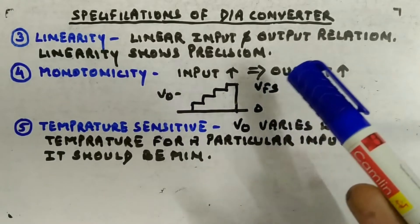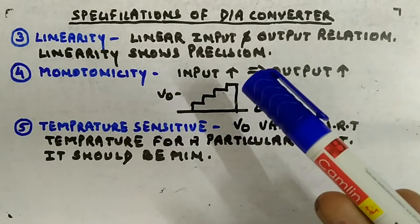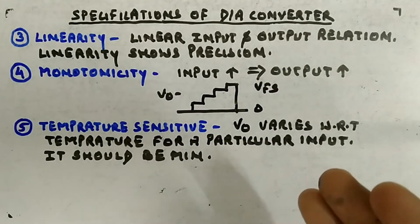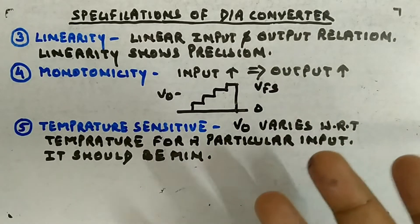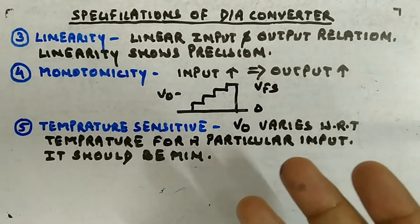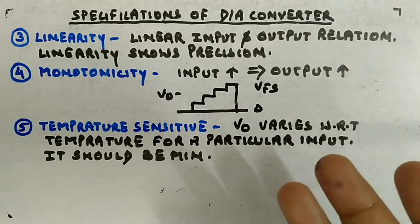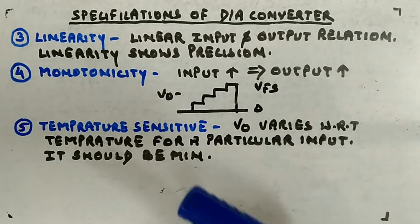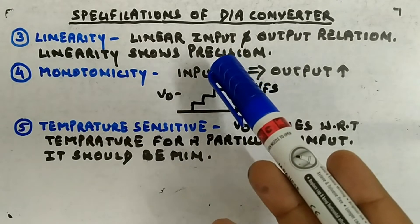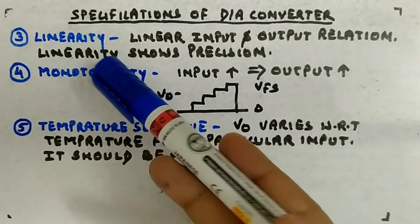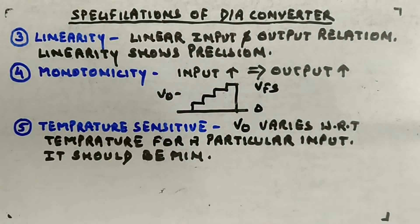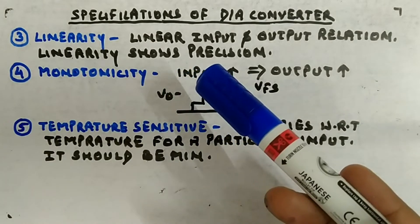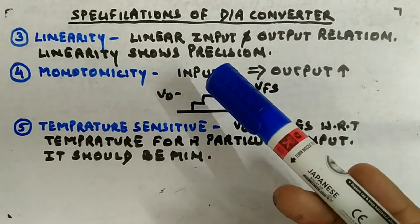Small increments in the input should lead to small increments in the output. That is one attribute of your digital-to-analog converter which should be followed — linearity should be there in your DAC.